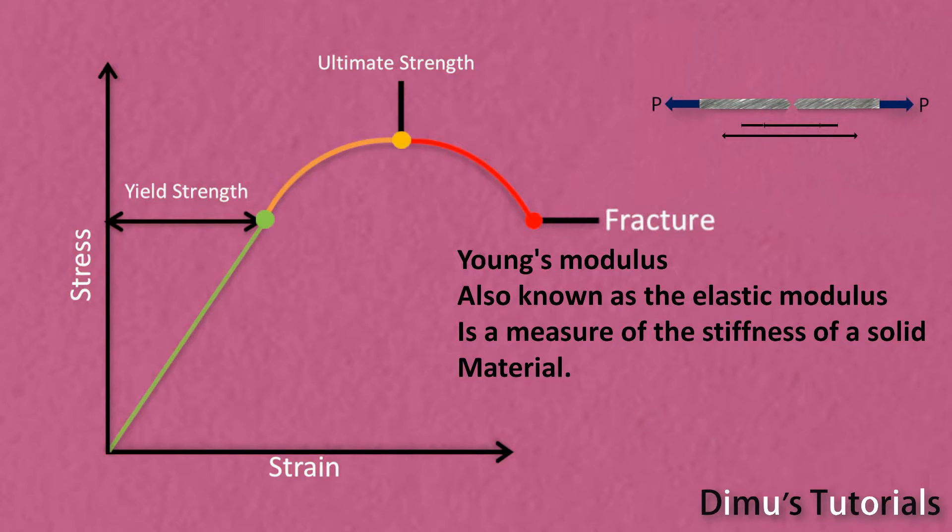Young's modulus, also known as the elastic modulus, is a measure of the stiffness of a solid material. It is the ratio of stress and strain during tensile test mentioned here.